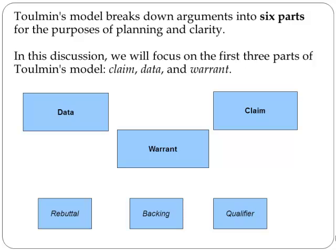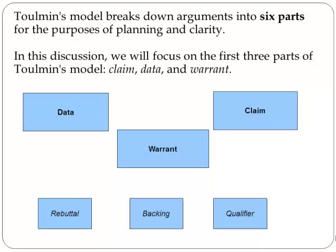Tolman's model breaks down arguments into six parts. In this discussion we will focus on the first three parts of Tolman's model: Claim, Data, and Warrant.